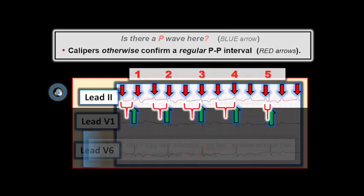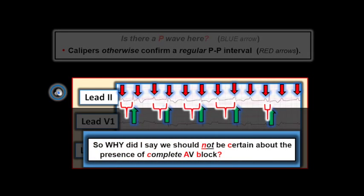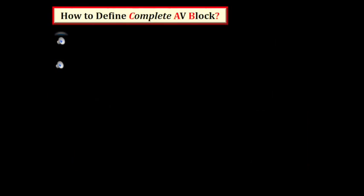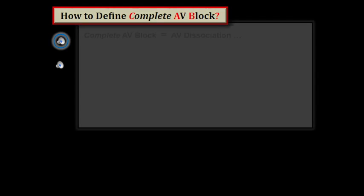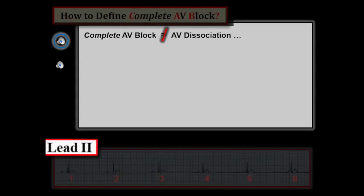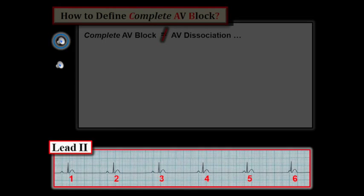So why did I say that we should not be certain there is complete AV block? The answer relates to how we define complete AV block, highlighting the difference between AV dissociation versus complete AV block. We illustrate this concept with the rhythm strip below.